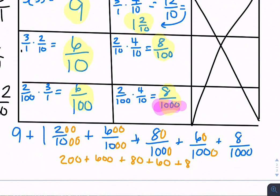So now I have 200 plus 600 plus 80 plus 60 plus 8. So that would be 8, 14, so I'm going to add another 100. I'm going to double check to make sure I'm doing this correctly. I have 948 over 1,000. So I have 9 plus 1 plus 948 over 1,000. So this would be 10 plus 948 over 1,000, or 10.948.